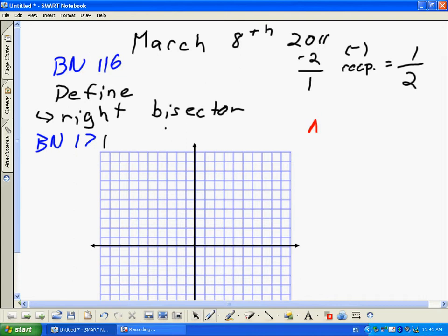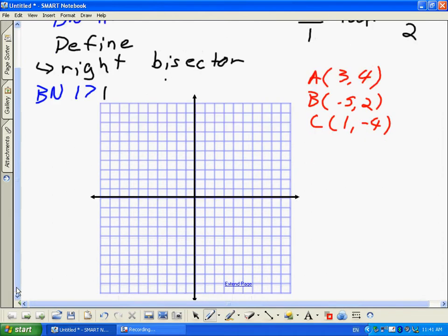So A is at 3 and 4. B is at negative 5 and 2. And C is at 1 and negative 4. The question asks to determine an equation for GH, which is the right bisector of AB. So first of all, let's plot our points.